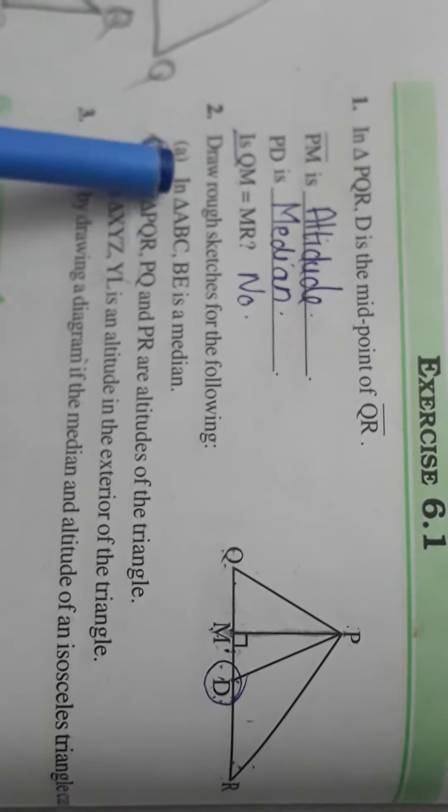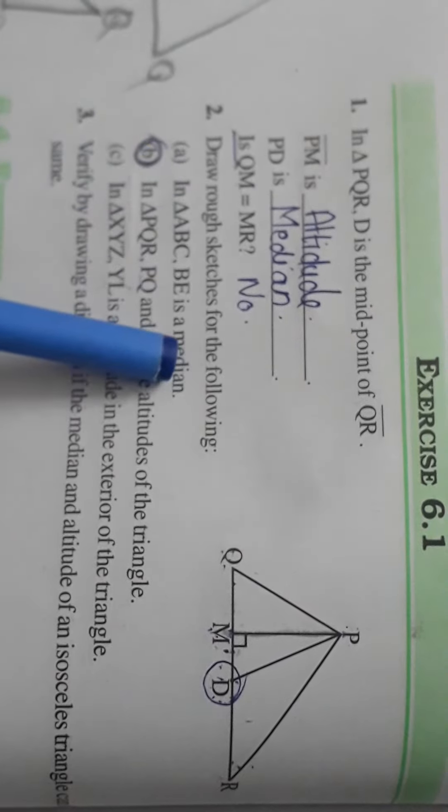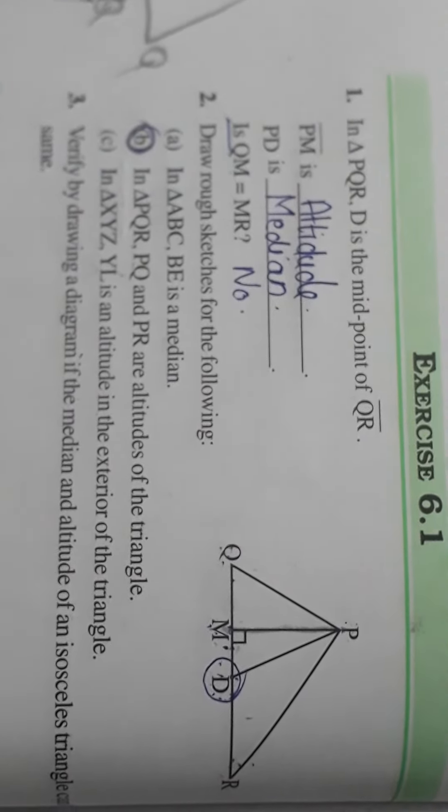Draw rough sketches of the following. Part A: In triangle ABC, BE is the median. Let us do this in a notebook.